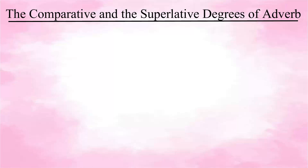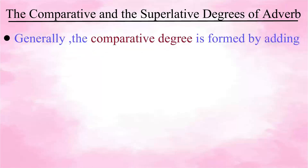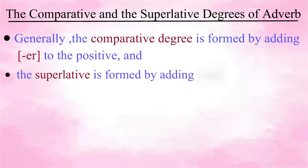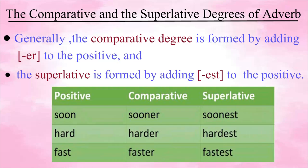Let us learn how to form comparative and superlative adverbs. There are three ways in which the comparative and superlative of adverbs are formed, depending on the spelling of the base adverb. First, when the adverbs retain the same form as the adjective form, the comparative degree is formed by adding 'er' to the positive and the superlative is formed by adding 'est' to the positive. Look at a few examples.